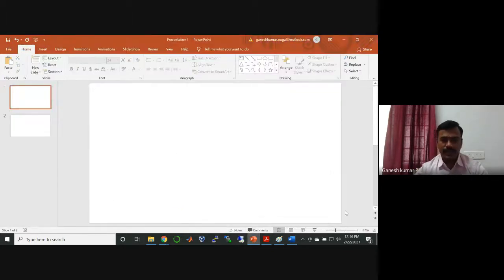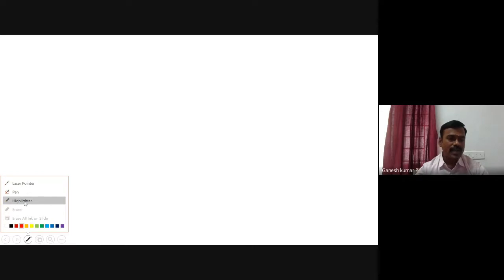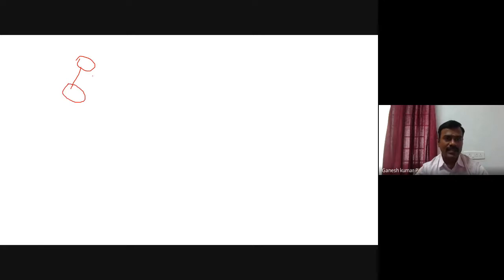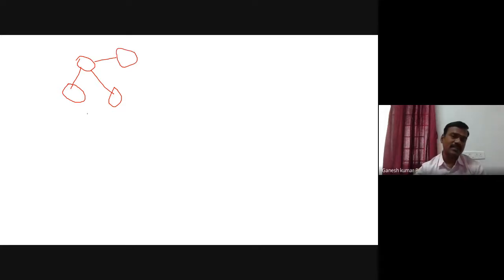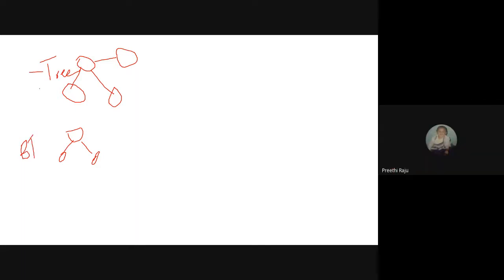First, let us introduce what is the spanning tree. You know what is a tree? A tree is a hierarchical data structure. It comes under a non-linear data structure and is treated as hierarchical. This is a tree, and this is a binary tree. What is the difference between these two? In a binary tree, it will have only a single left and a right child. In a general tree, there will be different kinds — many nodes will be there.